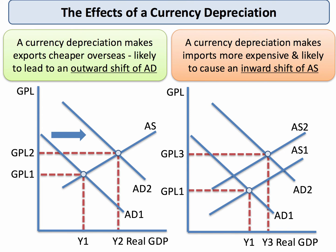On the other hand, a currency depreciation makes imports — the things we have to buy in from overseas — more expensive. And that causes an inward shift of aggregate supply, shown by my diagram. So we have a double effect here: we have an outward shift of demand, AD1 to AD2, caused by rising exports, but higher import costs causing a shift from AS1 to AS2. Overall, one could argue that currency depreciation is expansionary for output, but it can also lead to higher inflation.